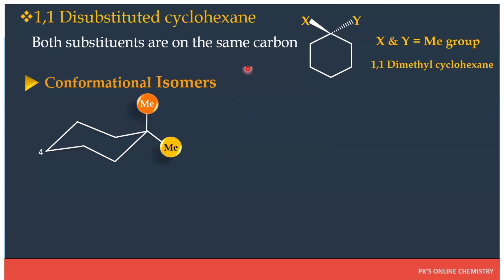As both substituents are present on the same carbon atom, in this conformation both methyl groups are present on the same carbon atom. Therefore, the substituent will occupy either an axial position or an equatorial position. In conformation A, one methyl group has occupied an axial position and another methyl group has occupied an equatorial position. This is the first chair conformation of 1,1-dimethylcyclohexane.